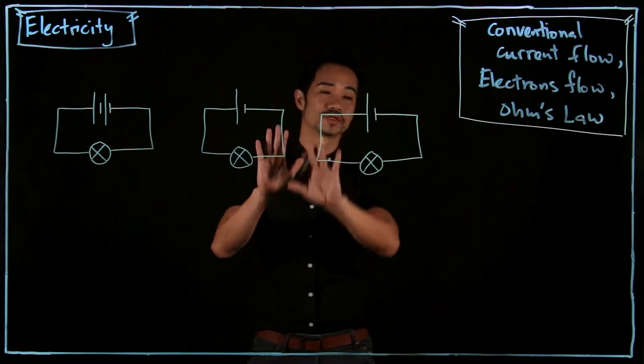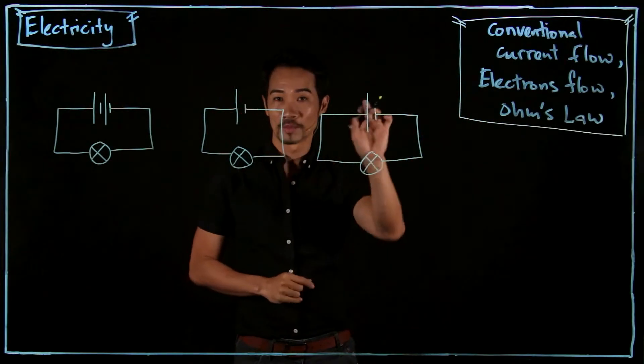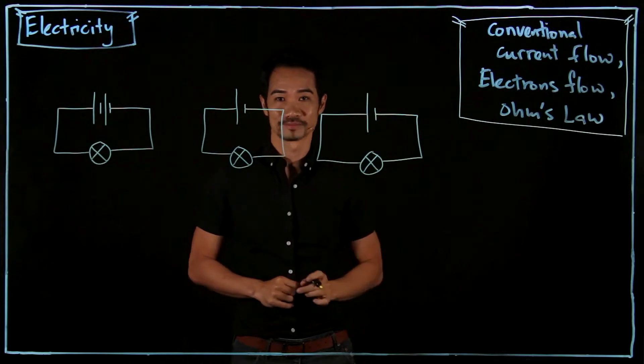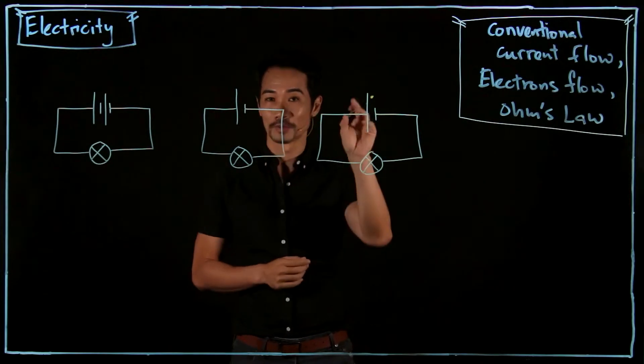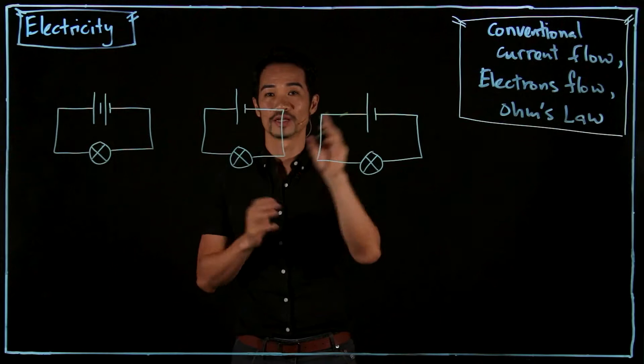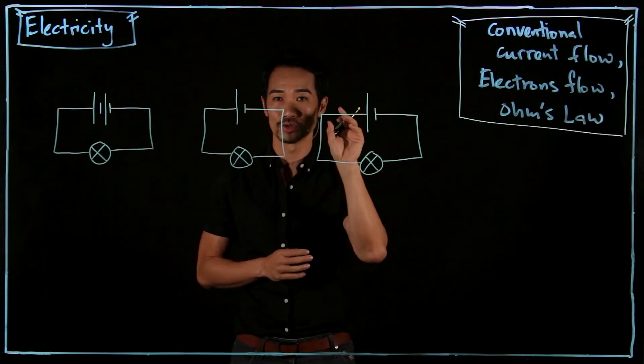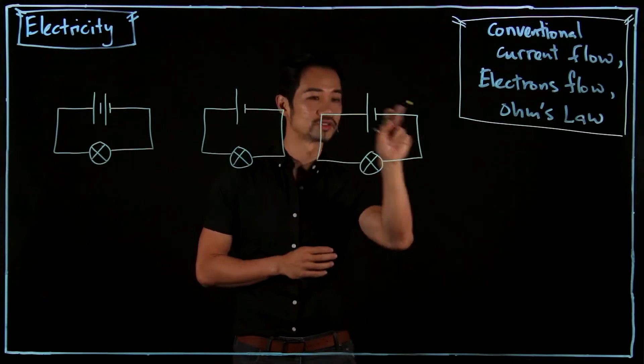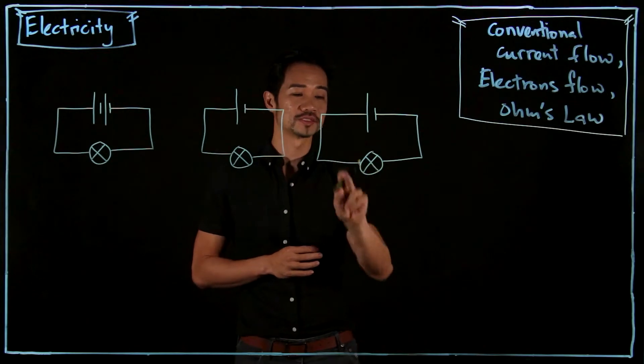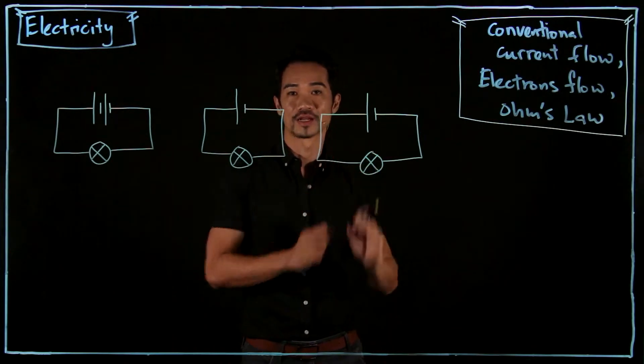So I have a circuit over here. And can you remember what does this symbol represent? Yes, it's a dry cell or a battery. Or we learned that it also provides electromotive force to drive the charge around. And what is this X-Men symbol? What does it represent? Yes, a light bulb.